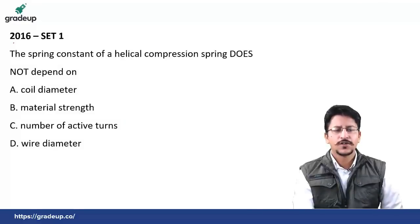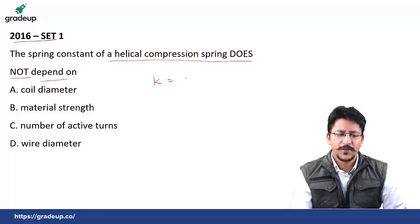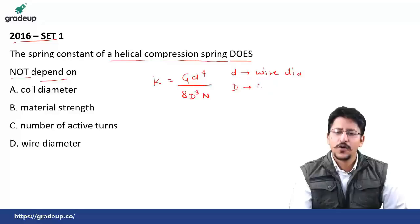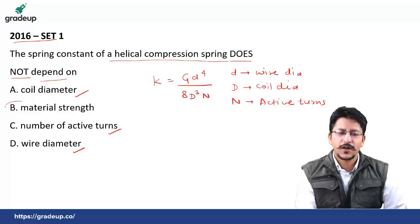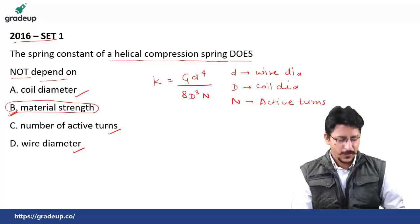The first question, 2016 Set 1: the spring constant of a helical compression spring does not depend upon what? The spring constant is given by k = Gd⁴ / (8D³n), where small d is the wire diameter, capital D is the coil diameter, and n is the number of active turns. We can see the spring constant depends on coil diameter, number of active turns, and wire diameter, but it does not depend upon material strength. So the answer is option B. Nothing much to explain.